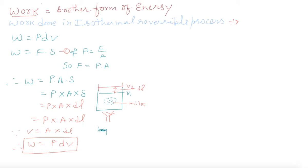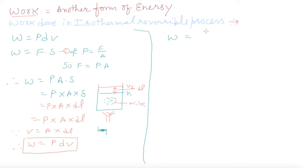Now expanding this, work done W = PdV, and since volume is changing from V1 to V2, we set up the integral: W = integral from V1 to V2 of PdV.